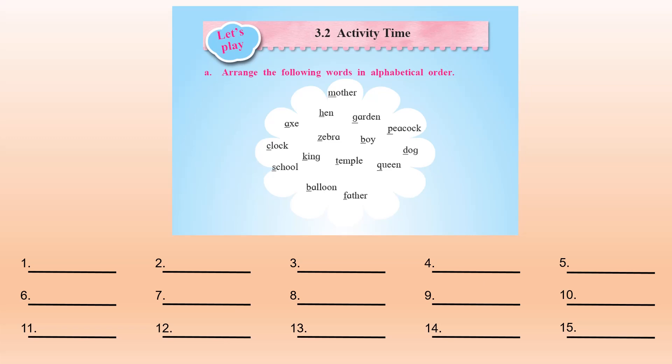When we have to arrange these words in alphabetical order, we have to arrange them according to their first letter. The word axe begins with the letter A, so axe will come first. The next letter in alphabetical order is B, but in these given words there are two words that begin with the letter B — one is balloon and the other is boy.